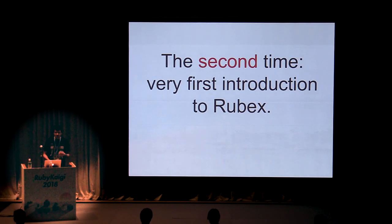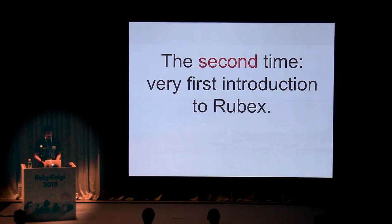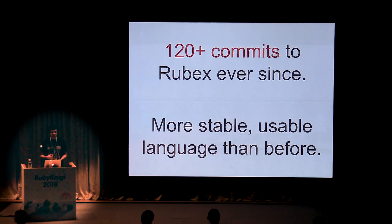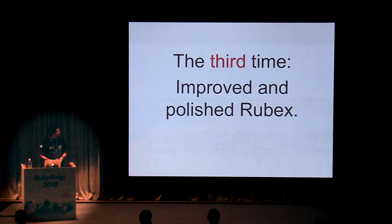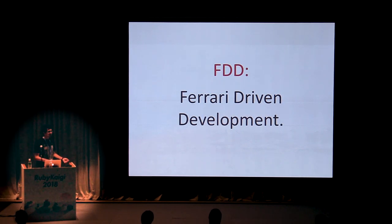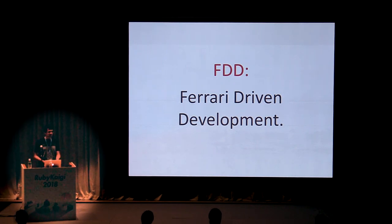The second time I came here, I talked about Rubex, which is what I will be talking about more today. Ever since I first introduced Rubex to the world, it has seen more than 120 commits and is a much more stable and usable language than before. This time I will be introducing you to a new way of writing Ruby code called FDD, or Ferrari Driven Development, which will allow you to write Ruby code in a very easy manner without too much complexity.